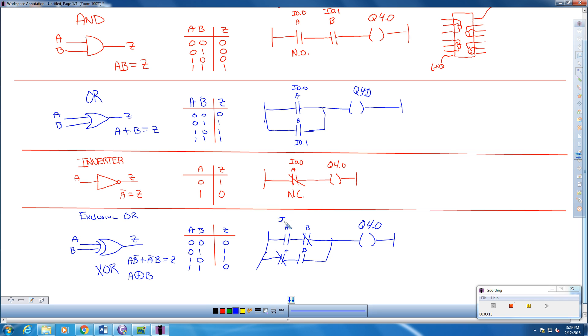Notice these are still four separate IO addresses. So this would still be I0.0. This is still I0.1. This guy down here is I0.2. And this is I0.3 when we're doing our ladder logic. So this is what an exclusive OR works.